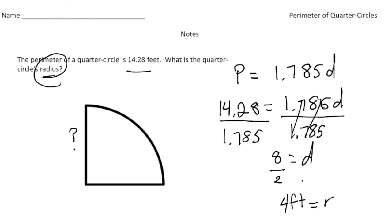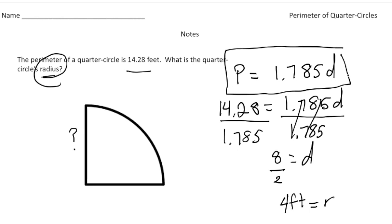The heart and soul of finding the perimeter of a quarter circle is this equation: P equals 1.785d. Why don't you now pause the video and try the 'your turn' problem. When you're done, hit play and you can see how you did. Good luck.